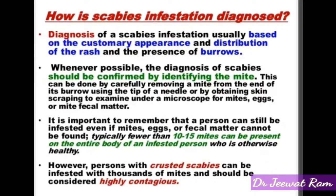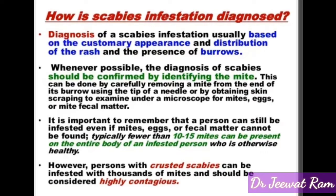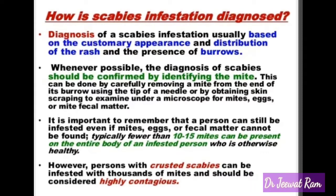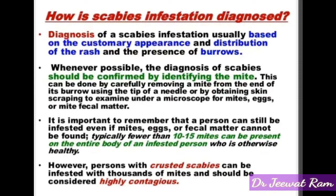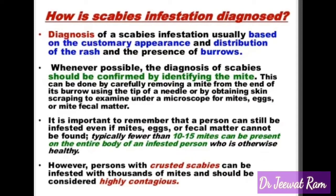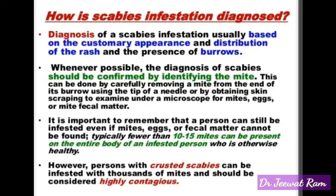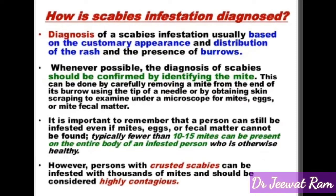How is scabies infestation diagnosed? Diagnosis of a scabies infestation is usually based on the customary appearance and distribution of the rash and the presence of burrows. Whenever possible, the diagnosis of scabies should be confirmed by identifying the mite. This can be done by carefully removing a mite from the end of its burrow using the tip of a needle, or by obtaining skin scrapings to examine under a microscope for mites, eggs, or mite fecal matter.